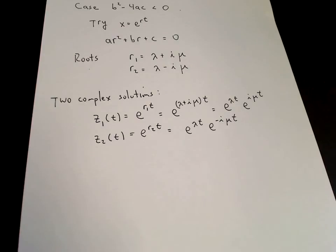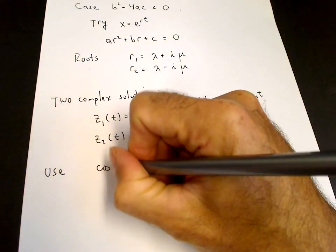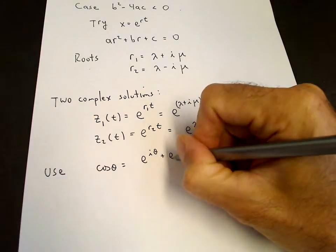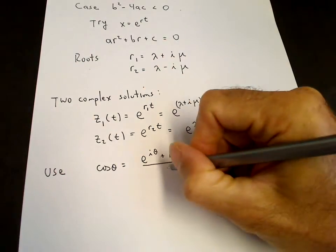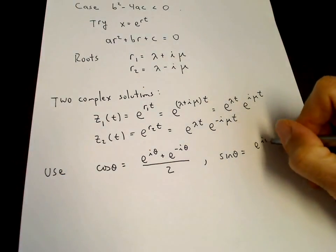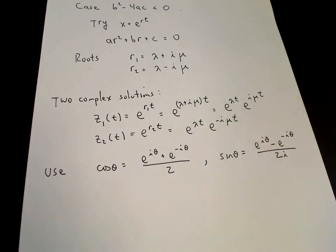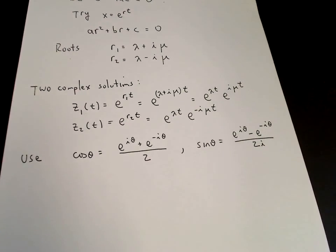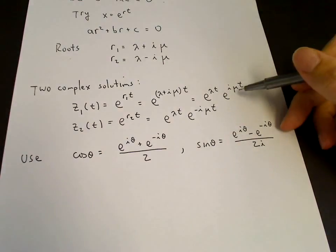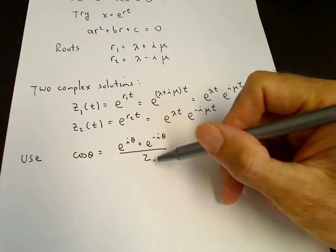We can use the fact that cosine theta equals e to the i theta plus e to the minus i theta over 2, and sine theta equals e to the i theta minus e to the minus i theta over 2i. So we can construct real functions from complex exponentials by taking these particular linear combinations. Here we have e to the i mu t and e to the minus i mu t, so we can add them and divide by 2 to get a cosine.